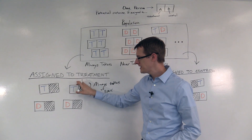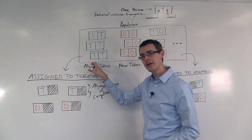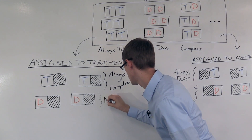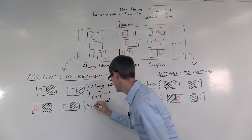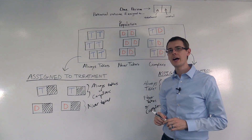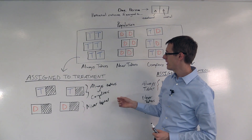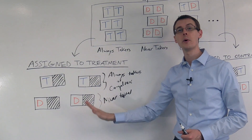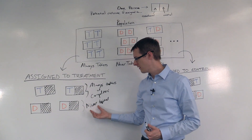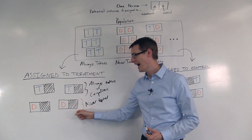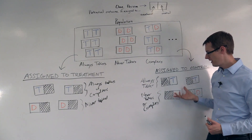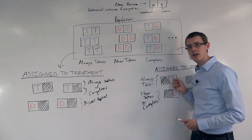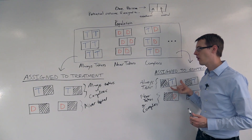What about these people? These people were assigned to the treatment group but did not get treated. So they can't be an always-taker, and they can't be a complier. They must be a never-taker. Now, remember there is a fourth category of people: defiers. A defier is somebody who, when assigned to treatment, doesn't get treated — so this looks like the behavior of a defier. But we've assumed defiers away. So this group, in theory, could have had a defier or a never-taker, but by our assumption we know this person is actually a never-taker. Likewise, over here in the control group, this first kind of person could have been a defier, because they were assigned to control but actually got treated. But we've assumed that kind of person doesn't exist, and so we know these people are always-takers.